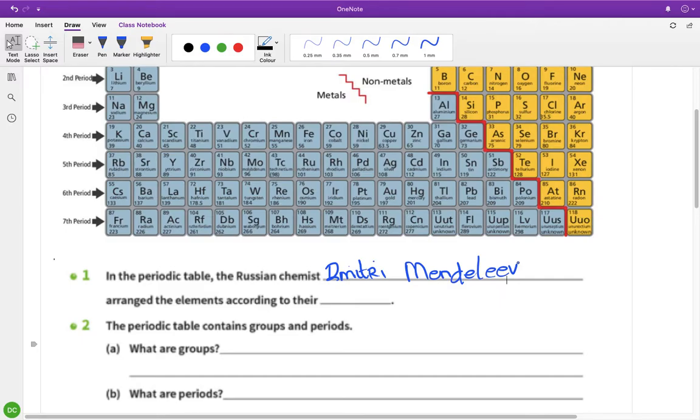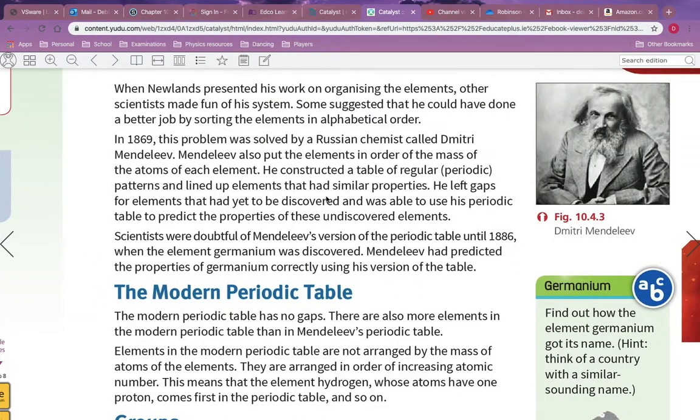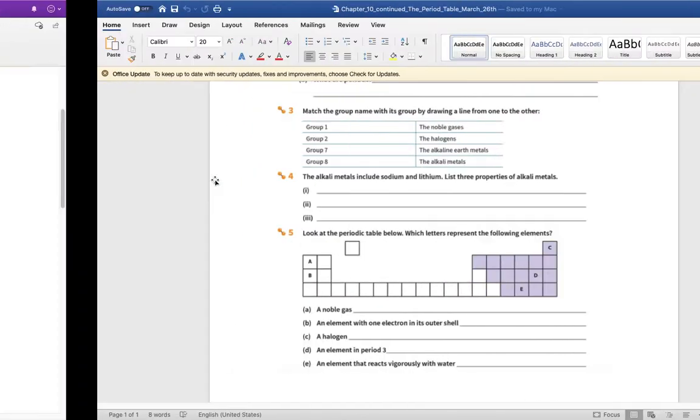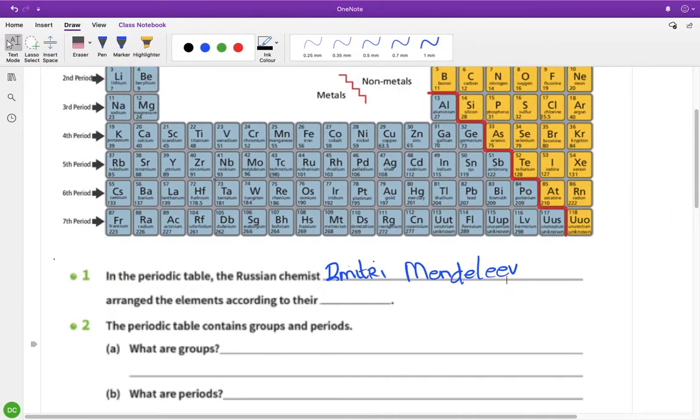He arranged the elements. Mendeleev also put the elements in order of mass of the atoms of each element, so you can say according to the mass of each atom, you can say according to - I'd probably say according to their atomic number.